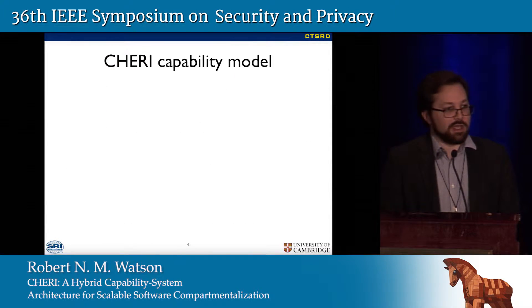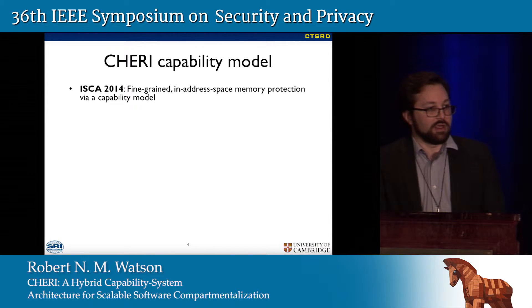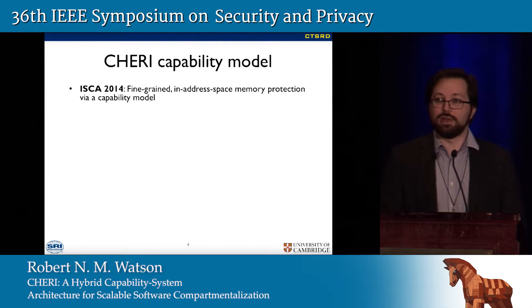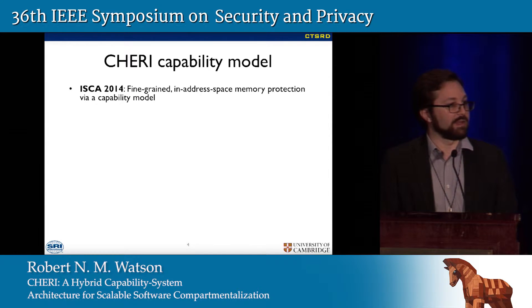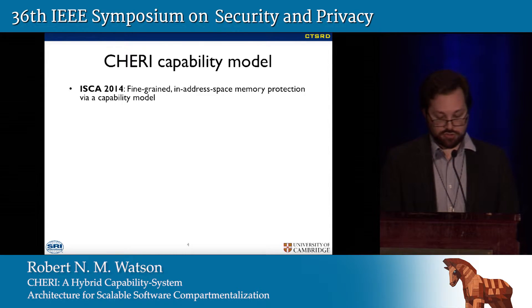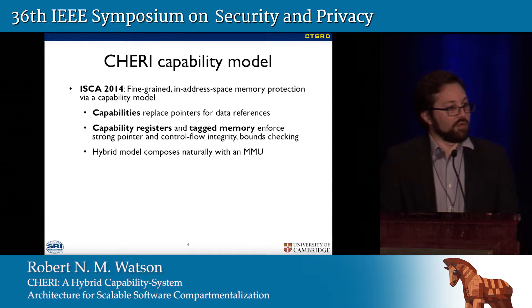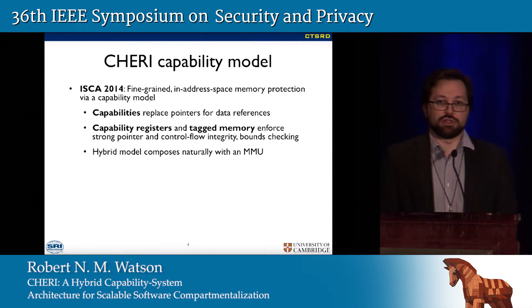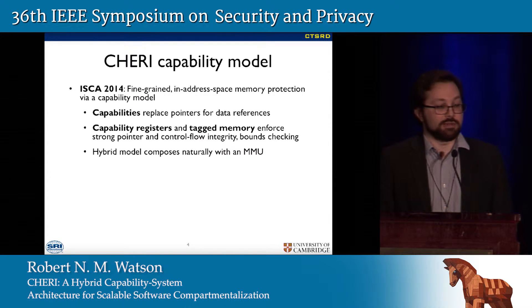Over the last couple of years, we've published a number of papers on the CHERI capability model. In 2014, we published a paper at ISCA on a fine-grained in-address-space memory protection model based on the idea of capabilities. A capability is a token of authority — it grants and delegates rights, and if you don't have the capability, you can't construct it. We implemented within address spaces the ability to use capabilities instead of pointers to reference data, giving us strong protection properties.